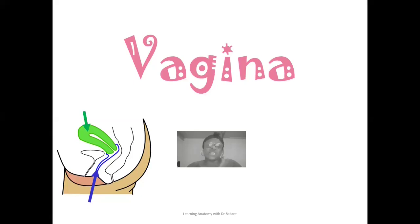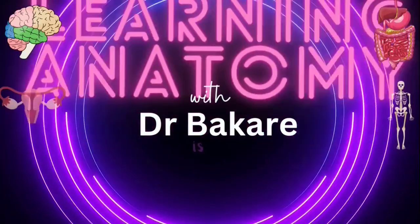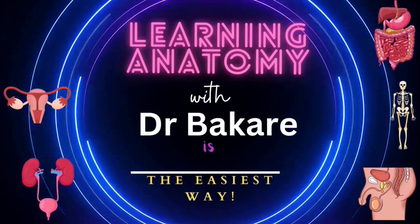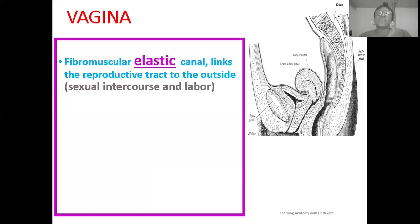We'll also be highlighting some key structures that you should know as students of anatomy. The vagina canal is a fibromuscular structure that is elastic in nature, and this is as a result of the deposits of elastic fibres in its histological structure. We'll be highlighting this when we get to the histology of the vagina canal. The vagina canal is seen to link the reproductive tract to the external environment.